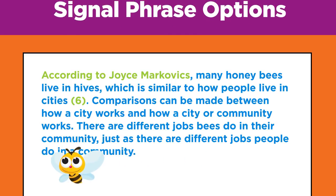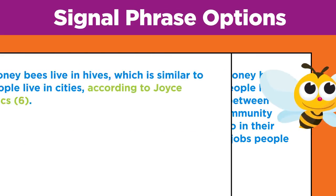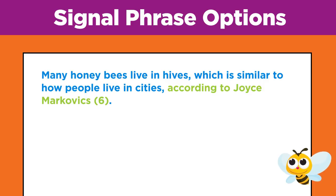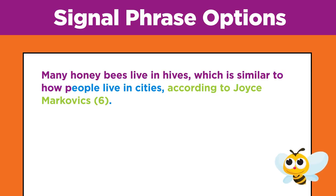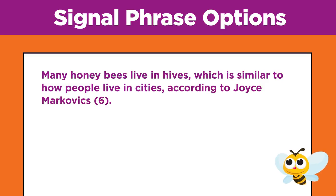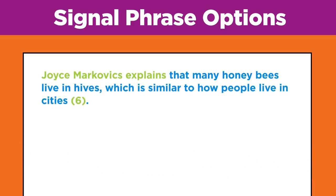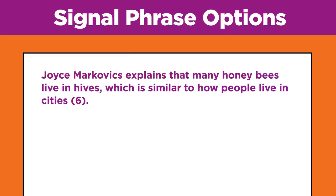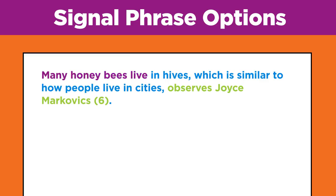There are many different ways to incorporate signal phrases. For example, Omar could have included it at the end of the sentence: 'Many honeybees live in hives, which is similar to how people live in cities, according to Joyce Markovic (6).' Or he could have changed the verb: 'Joyce Markovic explains that many honeybees live in hives, which is similar to how people live in cities (6).' Or: 'Many honeybees live in hives, which is similar to how people live in cities, observes Joyce Markovic (6).'